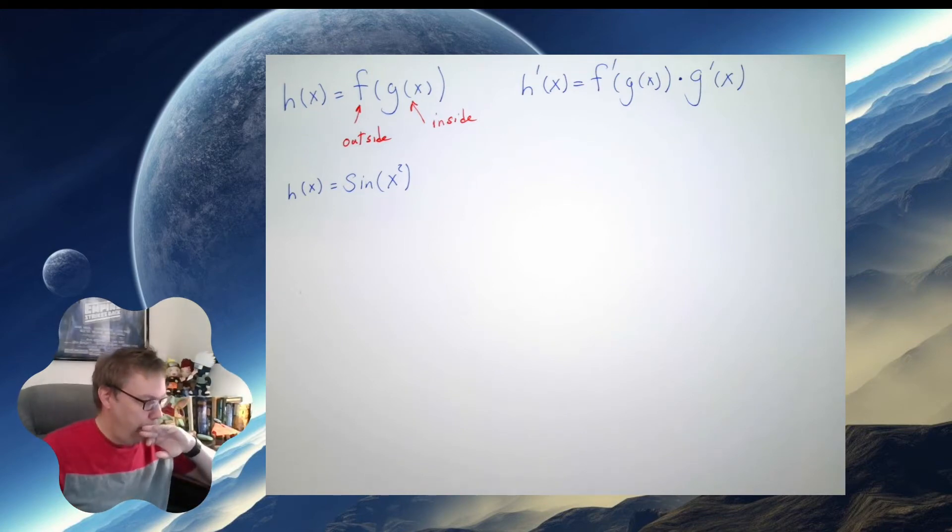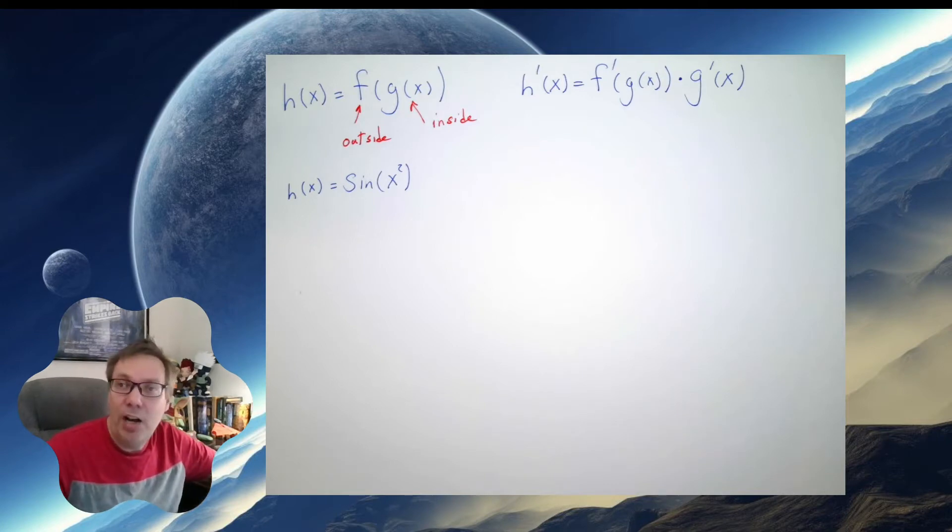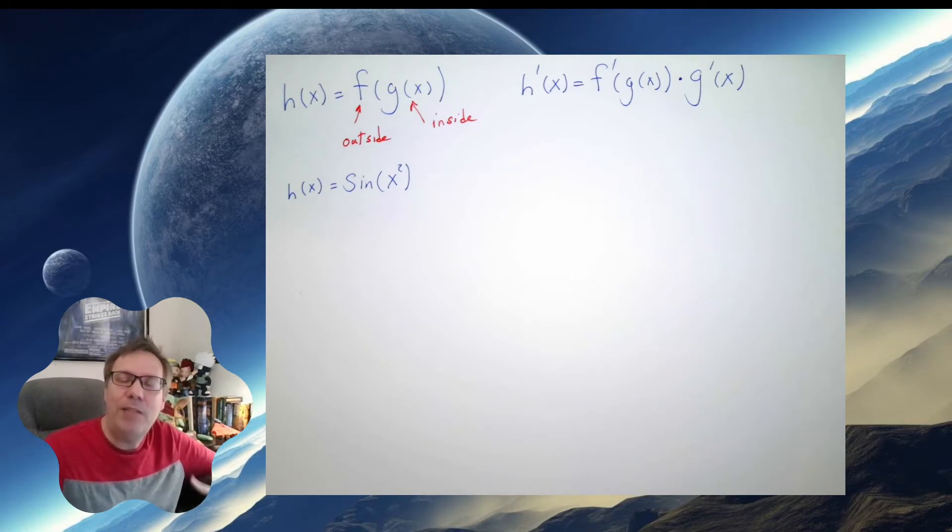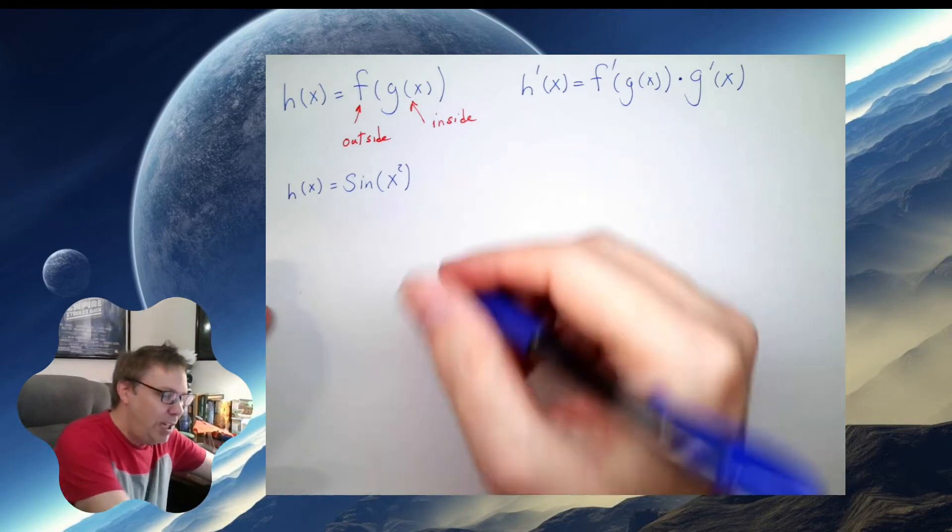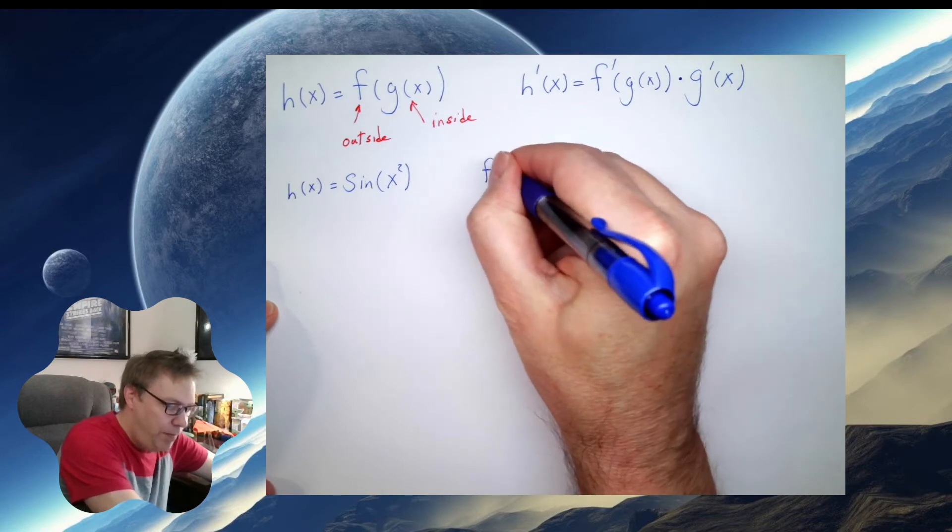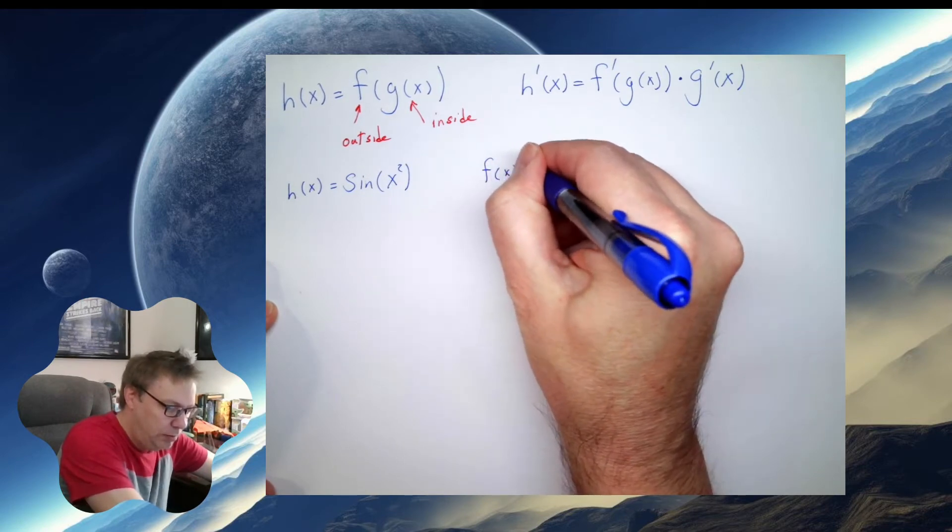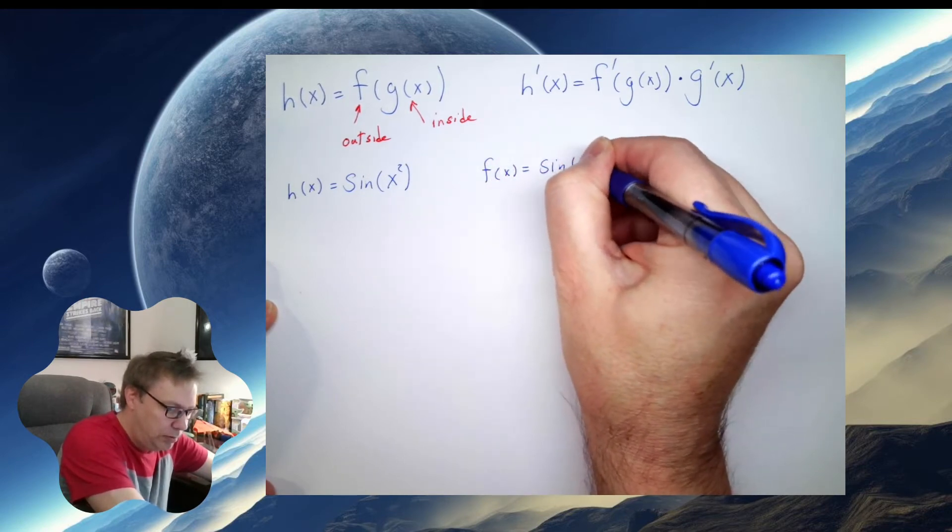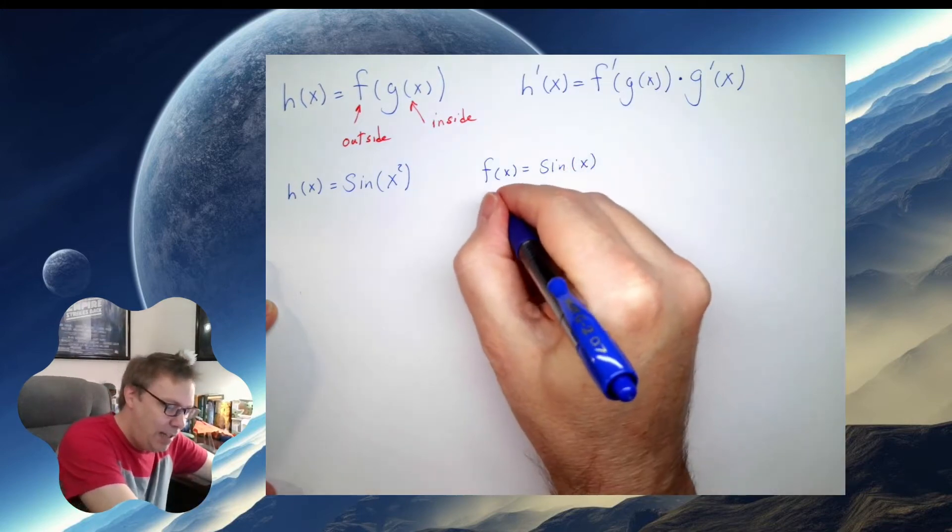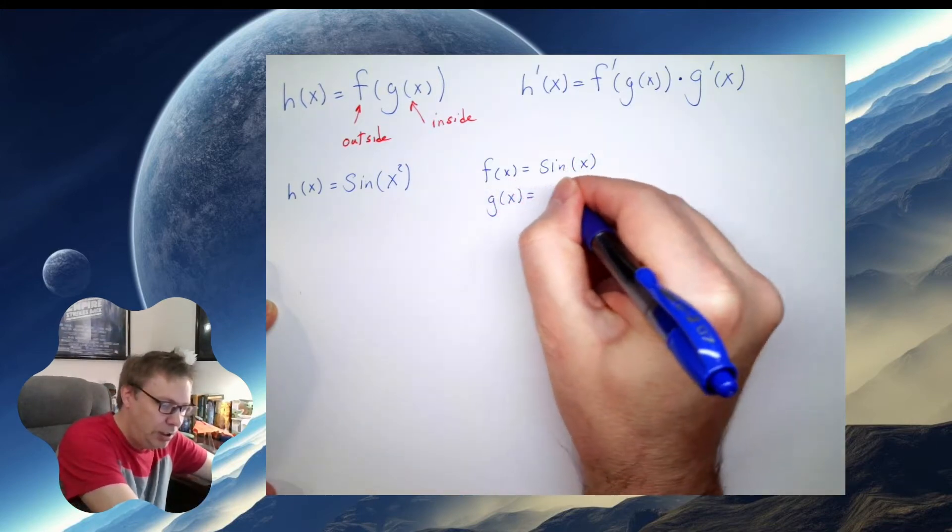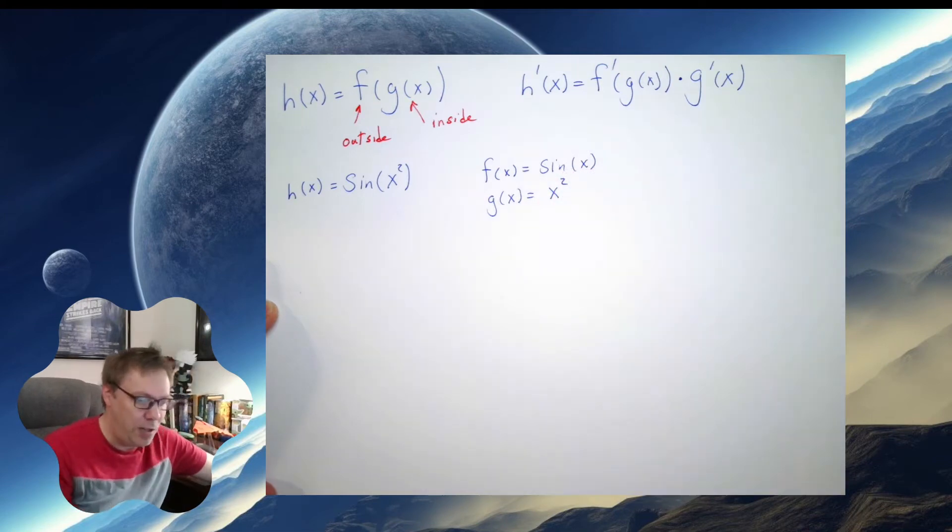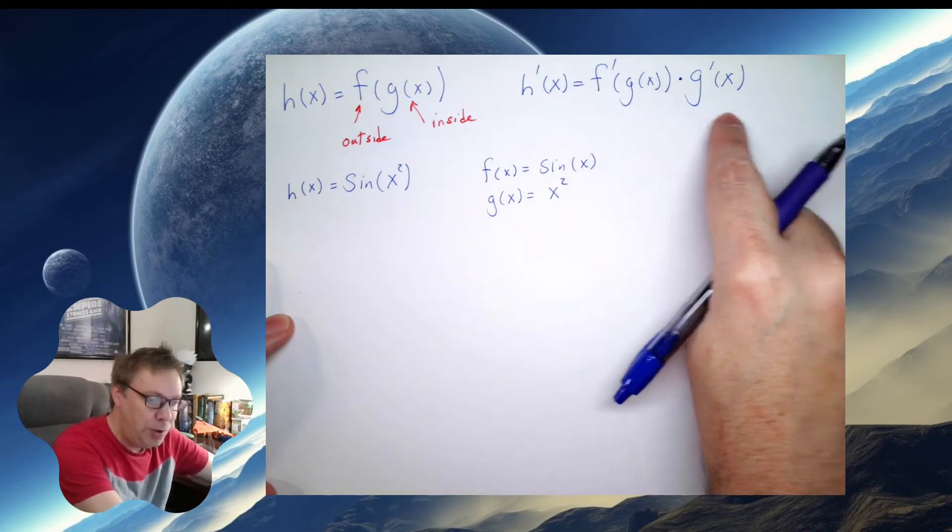So here's an example. h of x equals sine of x squared. Every time you hear the word of, think of inside, the thing that follows the word of. So the outside function here, the f function, is sine of x. And the inside function, g of x, is x squared.